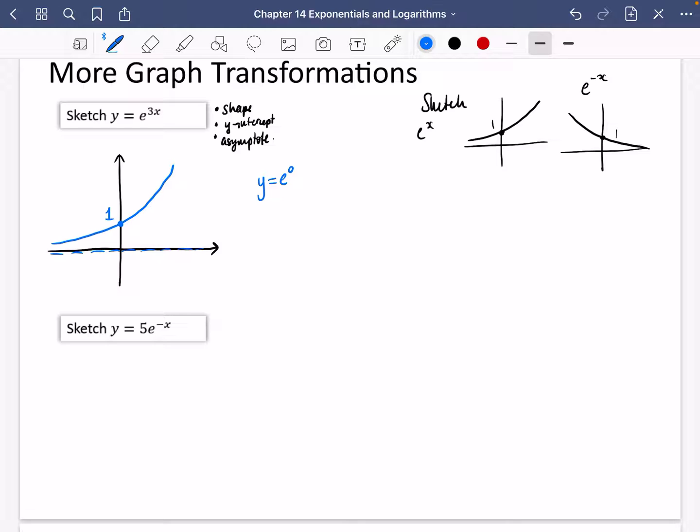So yeah, we could have thought about this as if f of x is e to the x, then we're doing f of 3x, which is e to the 3x. So yeah, it is a stretch in the x direction, and the scale factor is a third. But you can't tell from looking at this graph here that it has been stretched in the x direction. It still just looks like an exponential graph. So don't worry too much about this. Just think about, is it growth? Is it decay? What's the intercept? Where's the asymptotes?